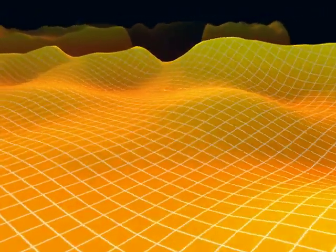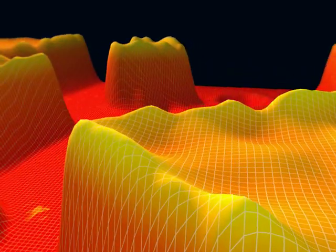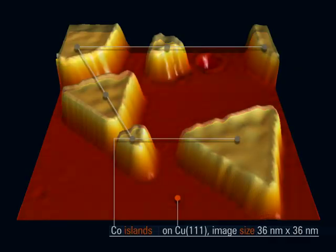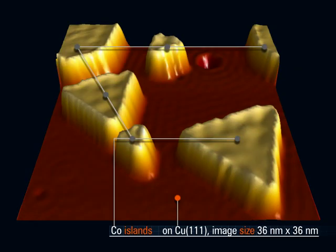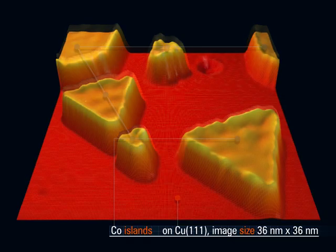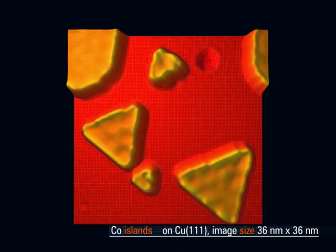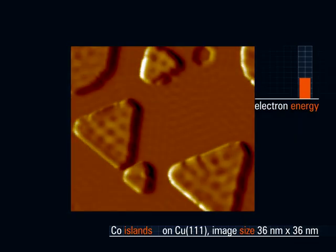Electrons can be confined within a nanostructure, where they're scattered back and forth between the boundaries of the structures. A modulation of the electron density results due to this scattering. These electron density modulations get more complex with increasing electron energy. The analysis of these patterns offers new insight into electron dynamics in nanostructures.